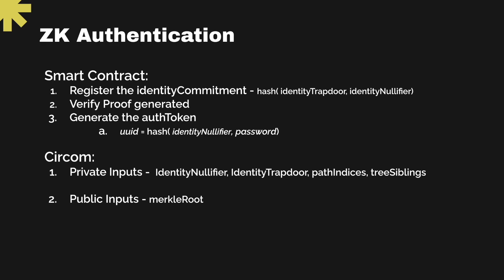We will register the identity commitment, which is the hash of the identity trapdoor and identity nullifier, verify the proof under the smart contract, and in this scenario generate an auth token constituting the UUID of the user — which is the hash of the identity nullifier and the password. On the circuit side, the identity nullifier and identity trapdoor forming the identity commitment become private inputs. We provide path indices and tree siblings to recompute the root. The public input is the Merkle root, required to verify that the generated root is correct. Now let's look at the demo of how this type of authentication works.